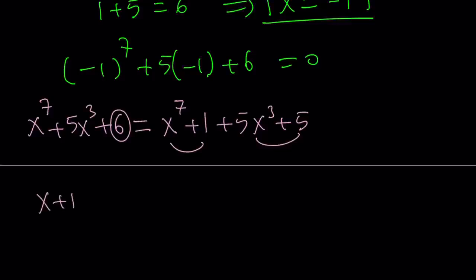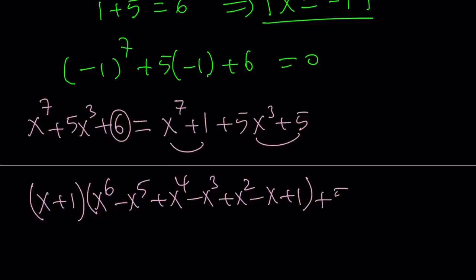x to the 7th plus 1 is a sum of two odd powers. So it's factorable. We can write this as (x plus 1) times (x to the 6th minus x to the 5th plus x to the 4th minus x cubed plus x squared minus x plus 1). And this one right here is 5 times (x cubed plus 1).